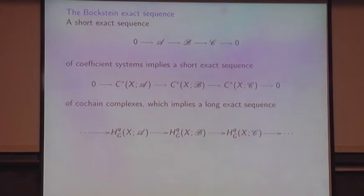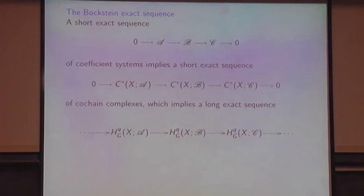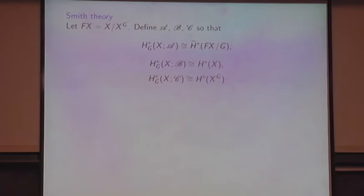The only tool I'm going to use is the Bockstein exact sequence. If you have a short exact sequence of coefficient systems, you get a short exact sequence of cochain complexes, and therefore you get a long exact sequence of cohomology groups. Totally elementary. The connecting homomorphism is called the Bockstein operation. That is the only tool I'll use to prove Smith theory.